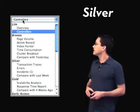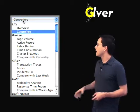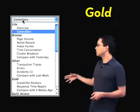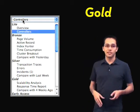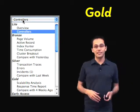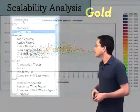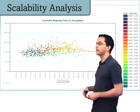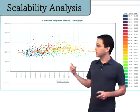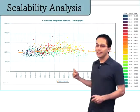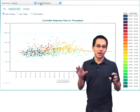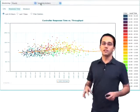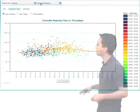Now we're going to take a look at some of the gold reports — these just get even cooler. First up is the scalability analysis. This graph looks really cool, but it's kind of hard to read, so I'll try to explain it to you step by step.